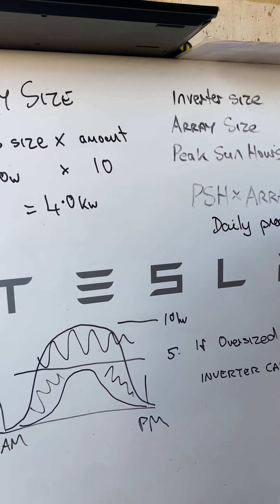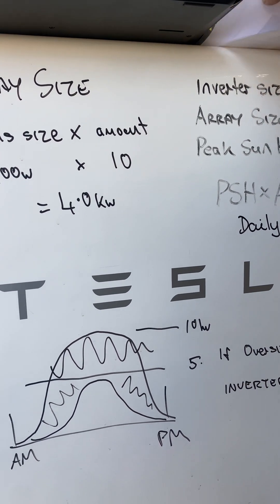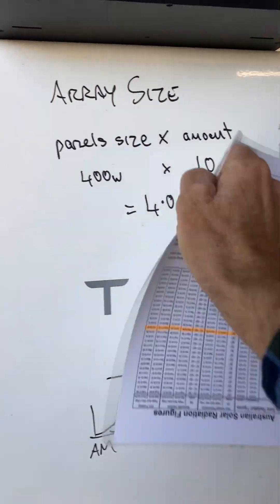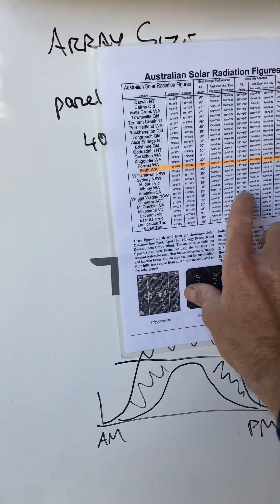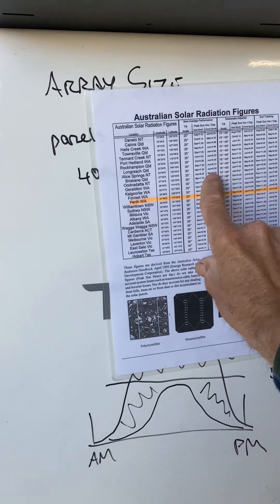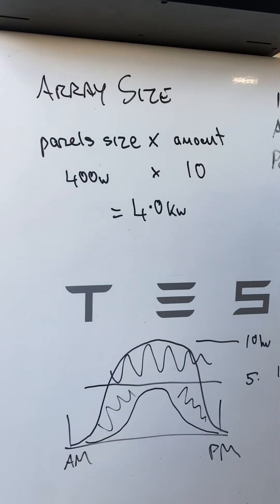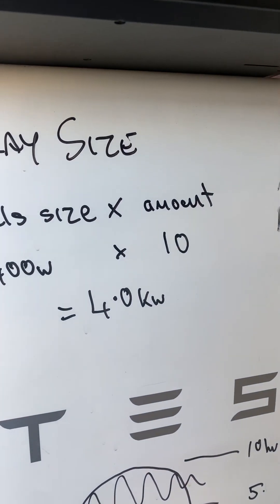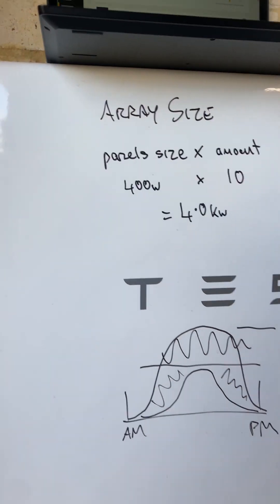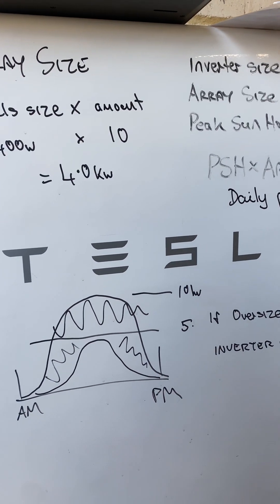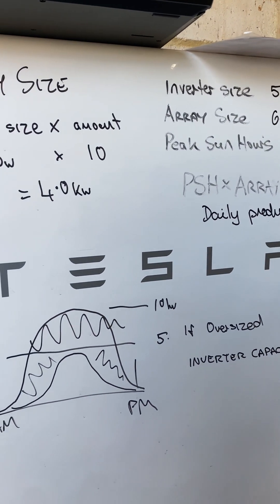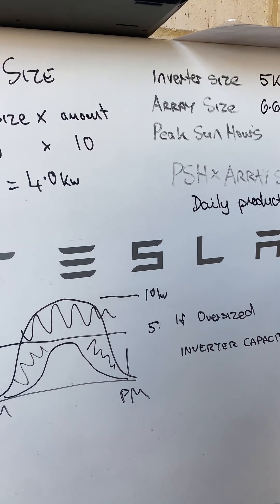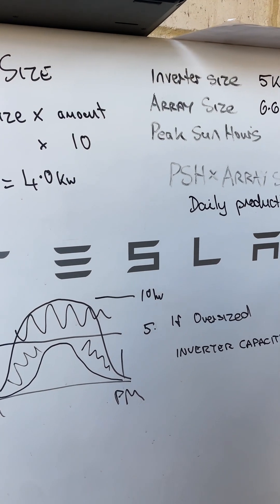So cross-reference that against your, now these peak sun hours vary from summer to winter, so you need to get your peak sun hours for your region at your time of year. And cross-reference that. Do it in winter, do it in summer. There's a lot of variables to it.